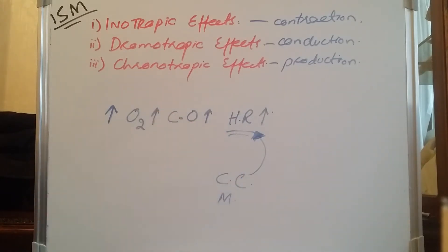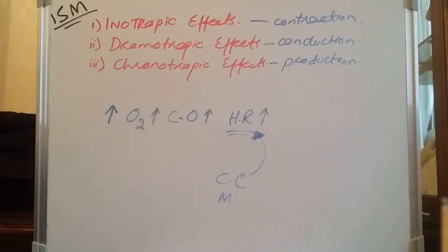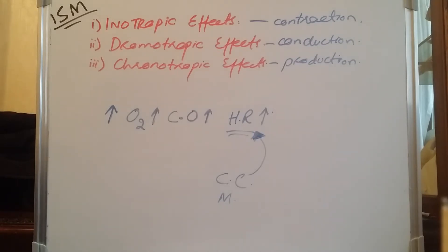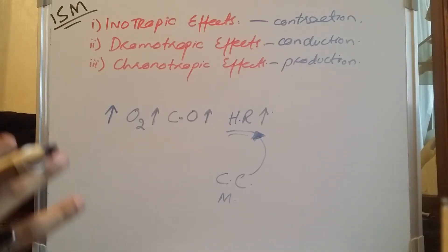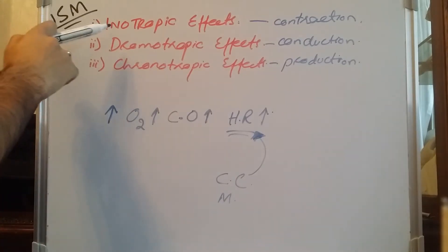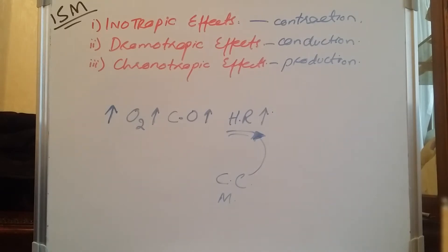From the cardiac center in the medulla oblongata, the heart rate is controlled. Effects which increase or decrease the heart rate, increase or decrease the conduction of impulses, and increase or decrease the contraction ability of heart muscles are all controlled by inotropic, dromotropic, and chronotropic effects.